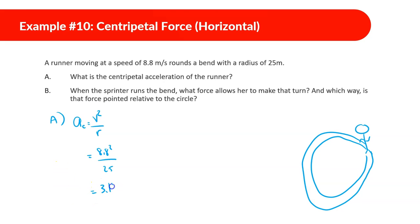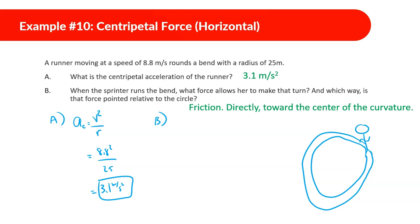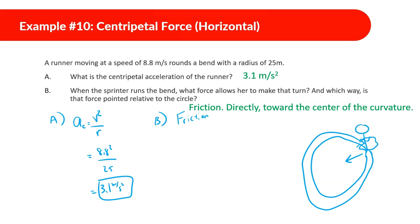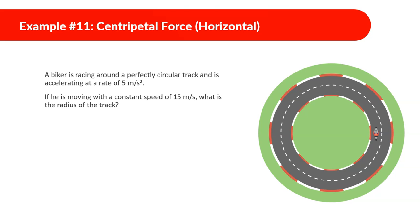Next: when the sprinter runs the bend, what force allows her to make that turn, and which way is the force pointed? The force that allows this person to move in a circle is friction. If you imagine going around a circle on a patch of ice, you can't turn without friction. The centripetal friction force is pointed toward the center of curvature.